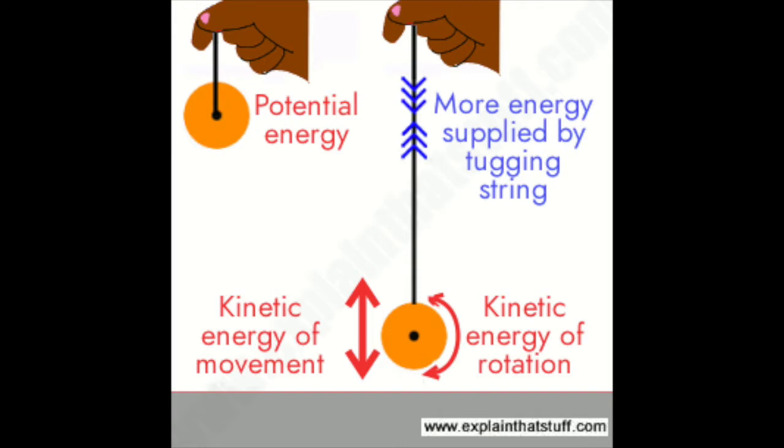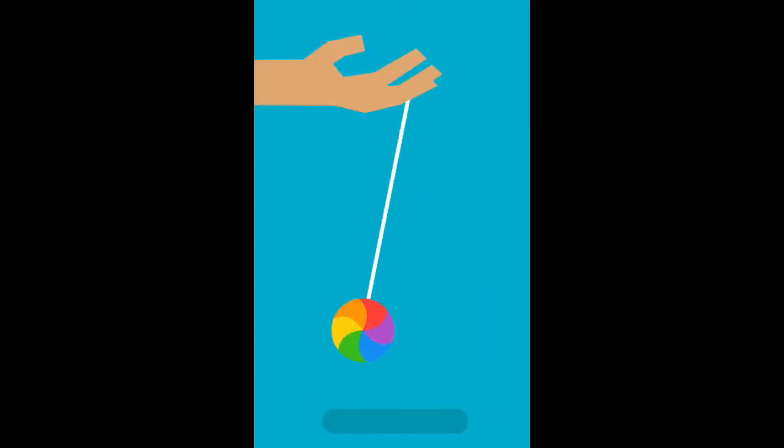When you hold a yo-yo in your hand with the string coiled around the axle, it has a lot of potential energy because it has energy ready to be used. When you release the yo-yo, it begins to drop and spin. At this point, potential energy is converted to kinetic energy because the yo-yo is now moving.